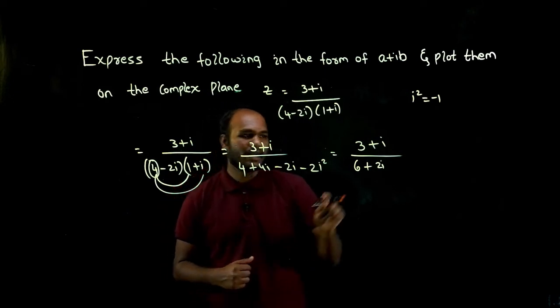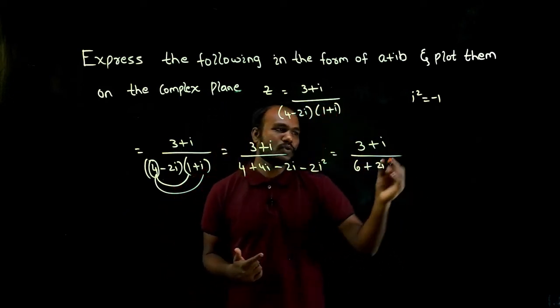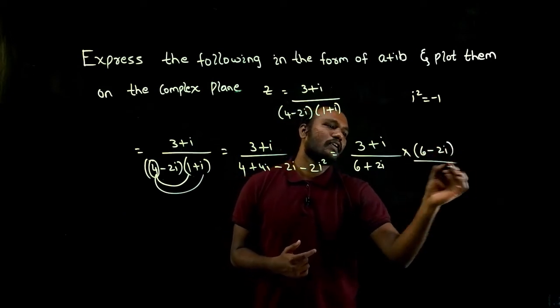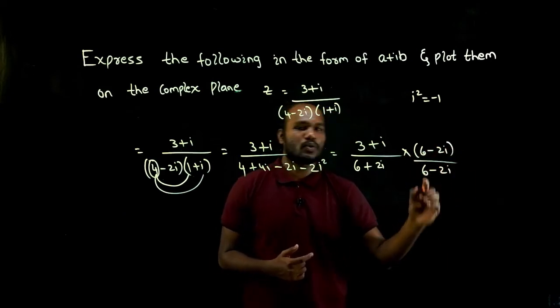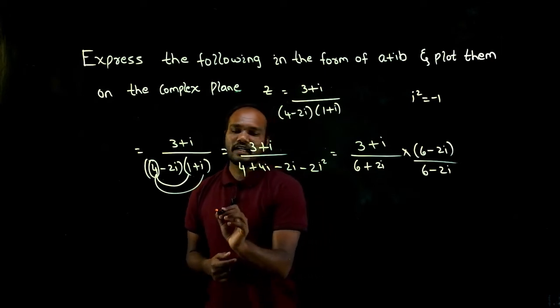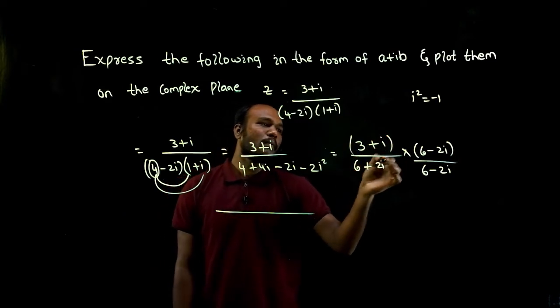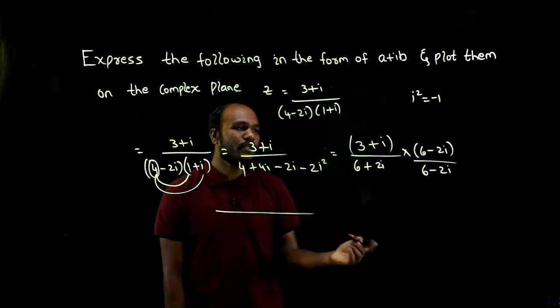So I have 6 plus 2i, and 3 plus i in the numerator. Let's multiply this with the conjugate 6 minus 2i in the denominator also. Let's multiply each complex number in the numerator and also in the denominator.